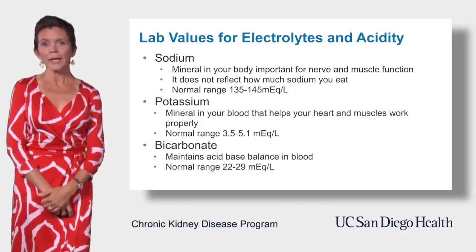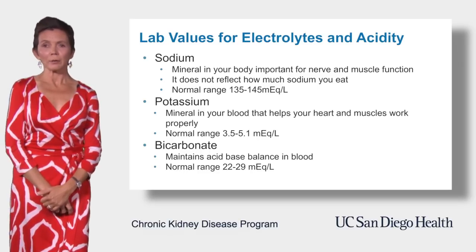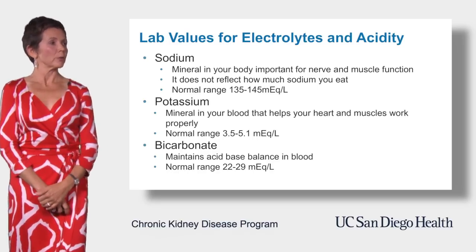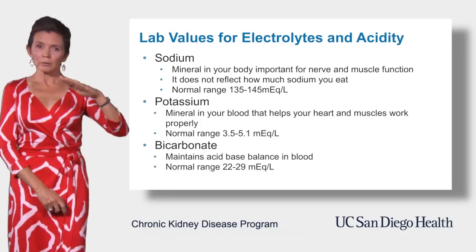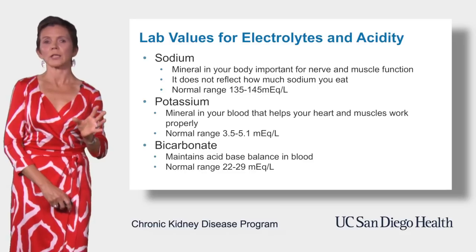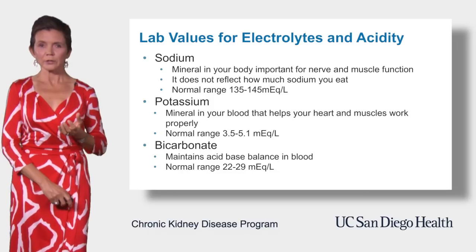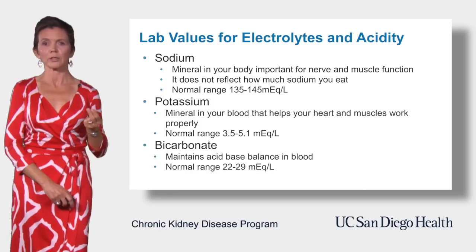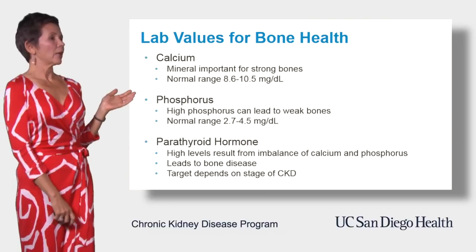Metabolic acidosis can also lead to weak bones and it can speed up the progression of chronic kidney disease. Normal value for bicarbonate is between 22 and 29. If your level is below that, your nephrologist might prescribe baking soda or a similar type of medication to correct it — to neutralize extra acid in your body and thus protect your muscles, protect your bones, and slow down the progression of chronic kidney disease.